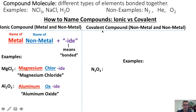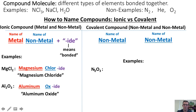Now if chemists wanted to name a covalent compound, for instance N₂O₃, they'd follow a very similar process in which they would first say the name of the first nonmetal, followed by the name of the second nonmetal, and then attach an "-ide" at the end to show that the two nonmetals have been bonded together. So we would say nitrogen and oxygen and add an "-ide".